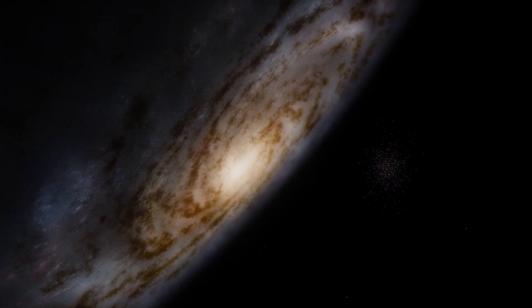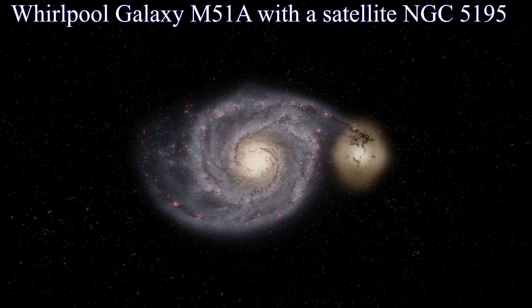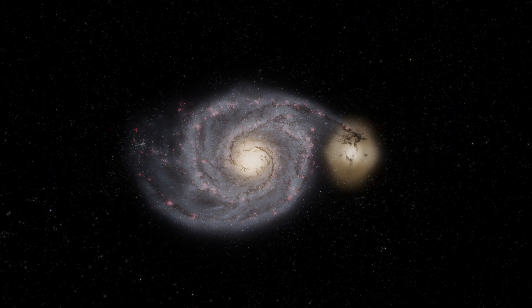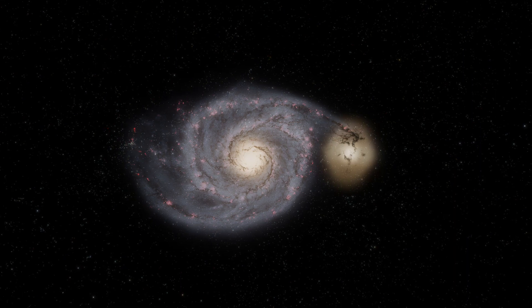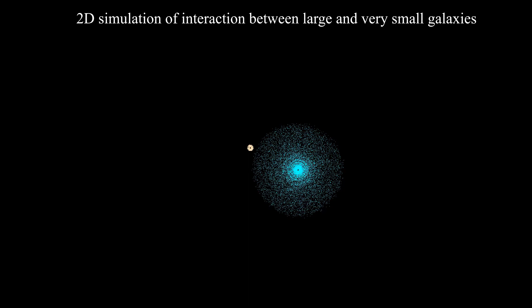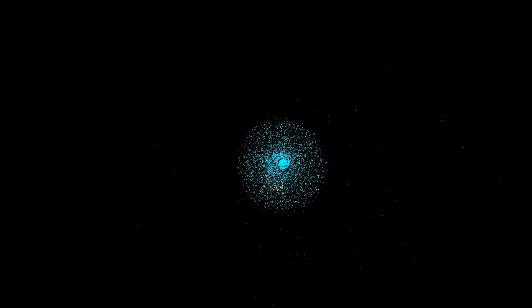I've even created several two-dimensional simulations of galaxy interactions using the classical theory of gravity and Python. Of course, it doesn't take into account relativism, the presence of dark matter and many other complex effects, but it somehow demonstrates what could happen as a result of some galactic interactions. Here you can see an interaction between a huge galaxy and a very small one — time is accelerated millions of times. A small galaxy was a satellite for a long time, but after that it was consumed by the large galaxy. And here we've come to another case of galaxy interactions: galactic cannibalism.